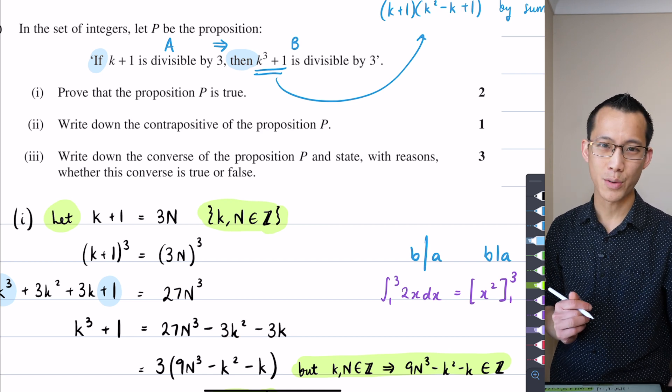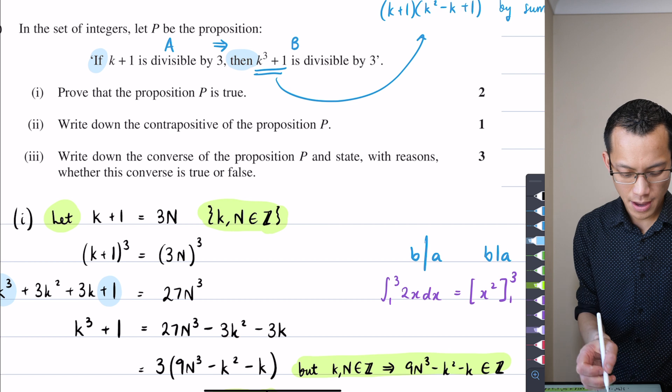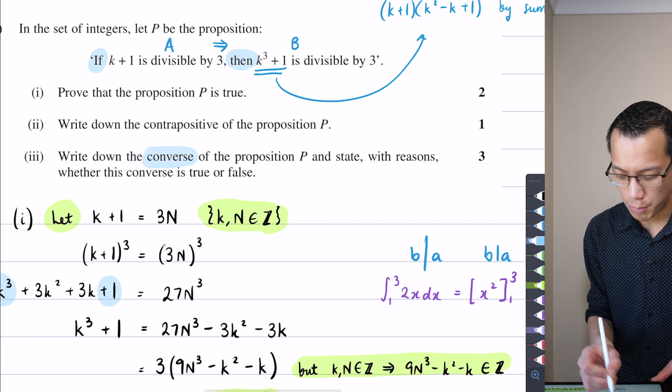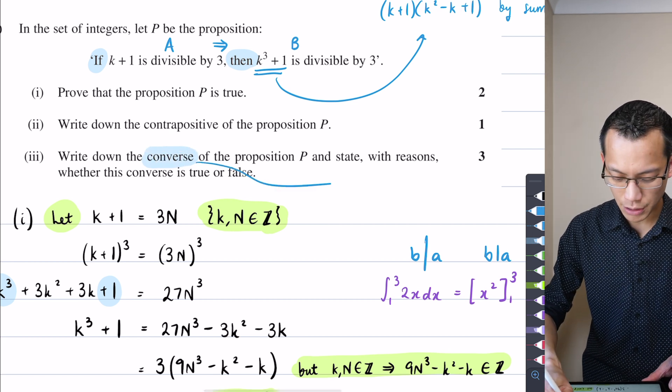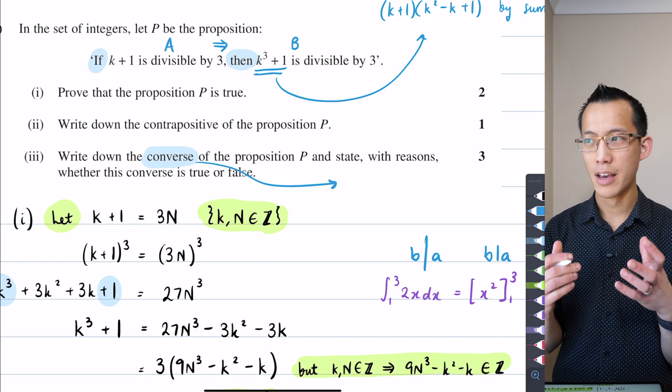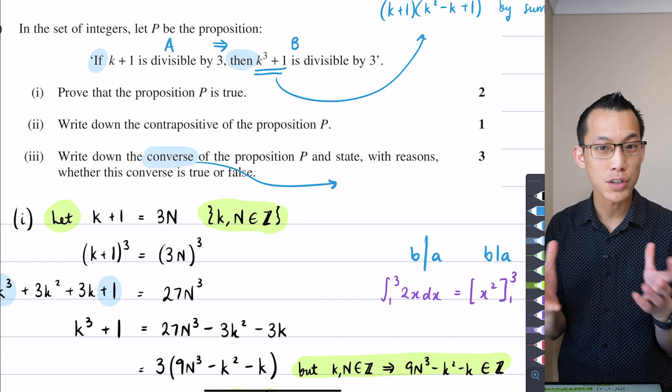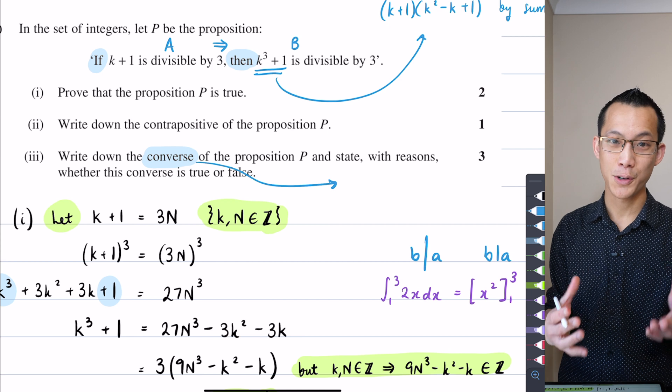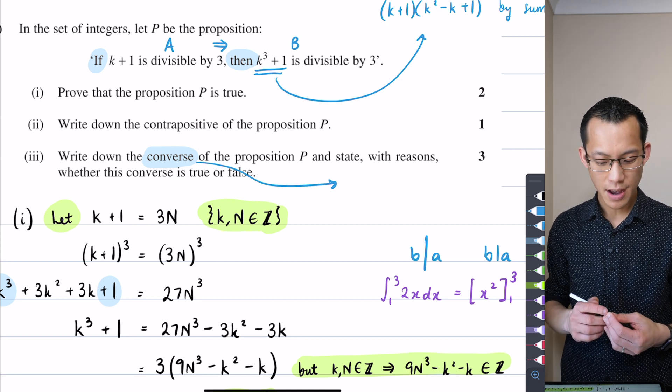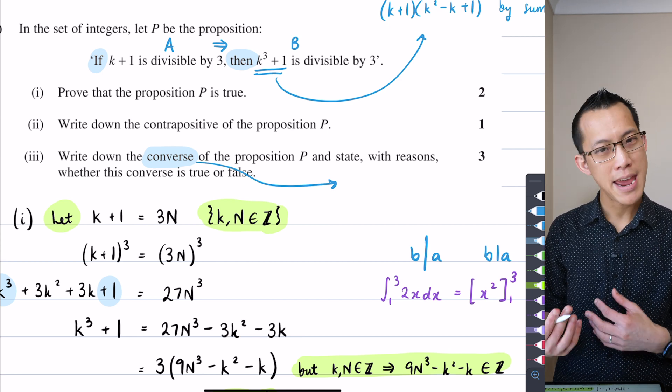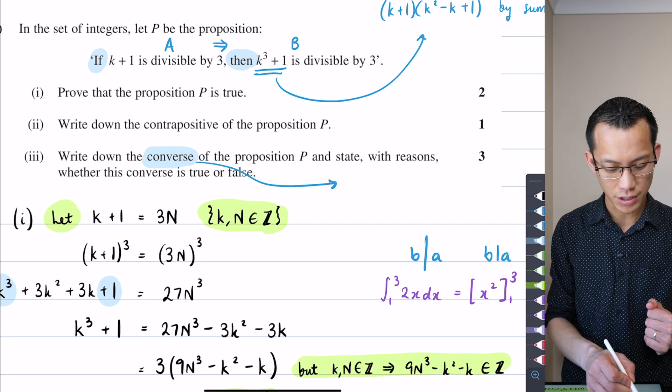Obviously the key idea here is this converse idea. This is an important thing to stop at because the whole issue is if you've got a statement that's true, which we've just shown proposition P is true, the converse of that statement may or may not be true.